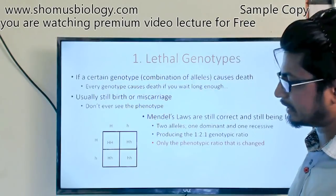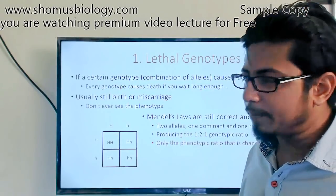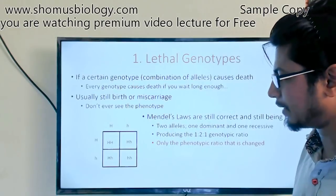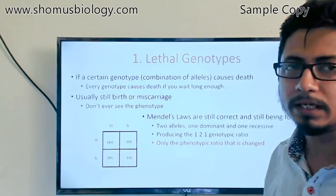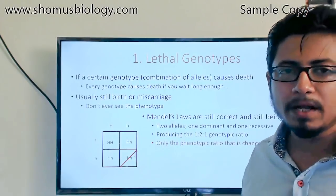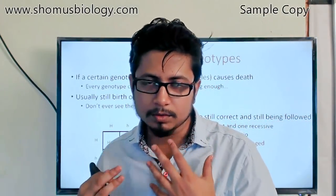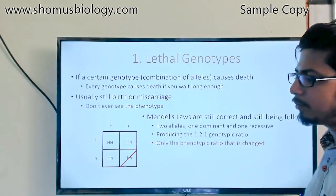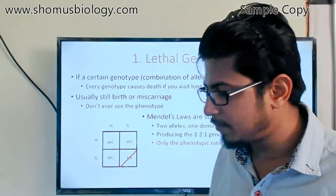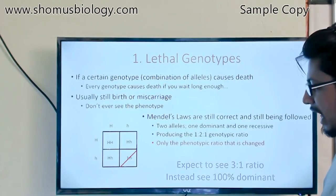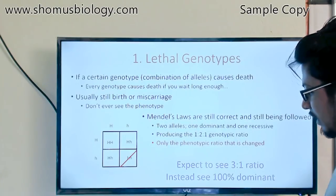Usually in a monohybrid cross the phenotype ratio is 3:1 — three with the dominant phenotype and one with the recessive phenotype. But with a recessive lethal genotype, the homozygous recessive organisms die, so there is no organism with the recessive phenotype. The ratio is therefore converted: 100% of the surviving organisms carry the dominant phenotype. Instead of Mendel's expected 3:1 ratio, we see 100% dominant — that is the lethal genotype modification.